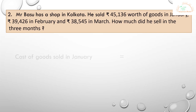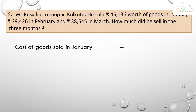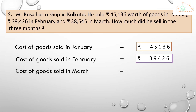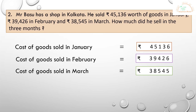Here is the solution. I have used the term 'cost' — it is the price or amount that has to be paid or spent to buy something. First statement: cost of goods sold in January is equal to rupees 45,136. Second statement: cost of goods sold in February is equal to rupees 39,426. Third statement: cost of goods sold in March is equal to rupees 38,545. We have to do the addition.